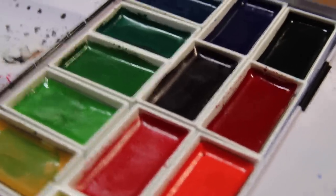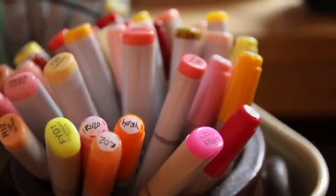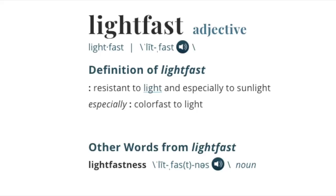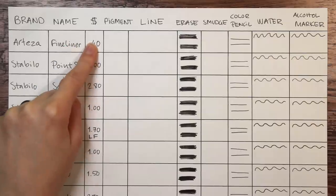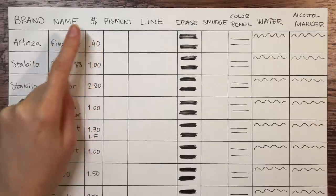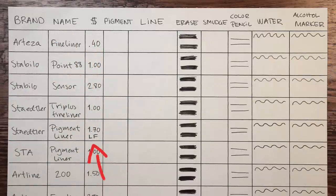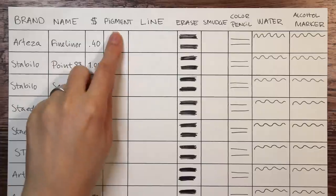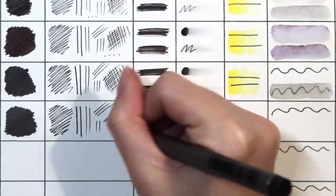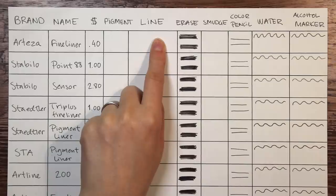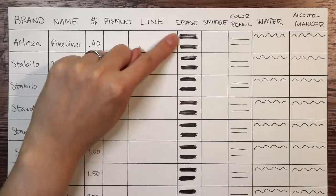Personally I always look for how well they do with watercolors and alcohol marker ink and if they are lightfast. So I have the brand and name and approximate price. The pens that are lightfast I marked with LF under the price. I will test how pigmented they are and how the line quality and nib versatility is. I will do an erase test to see how much the ink will fade.